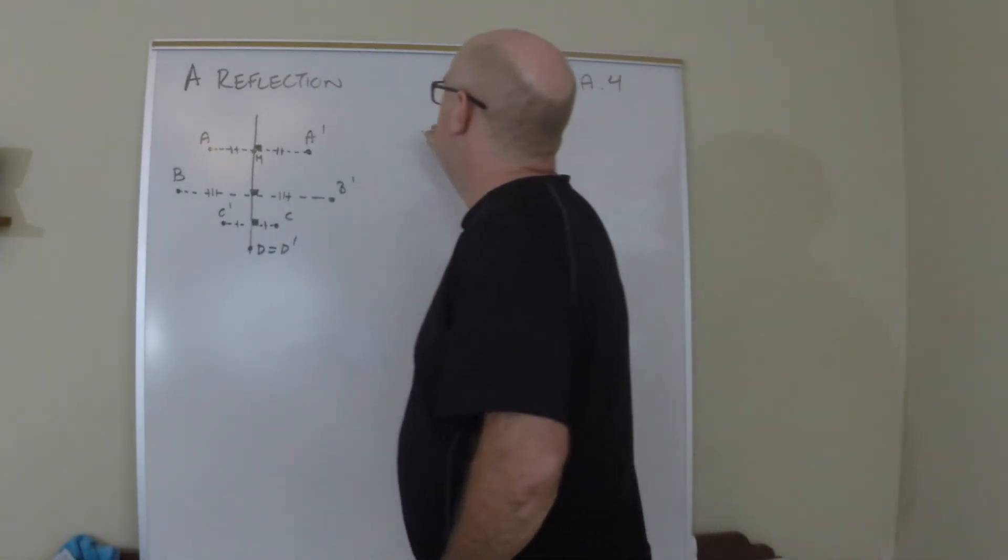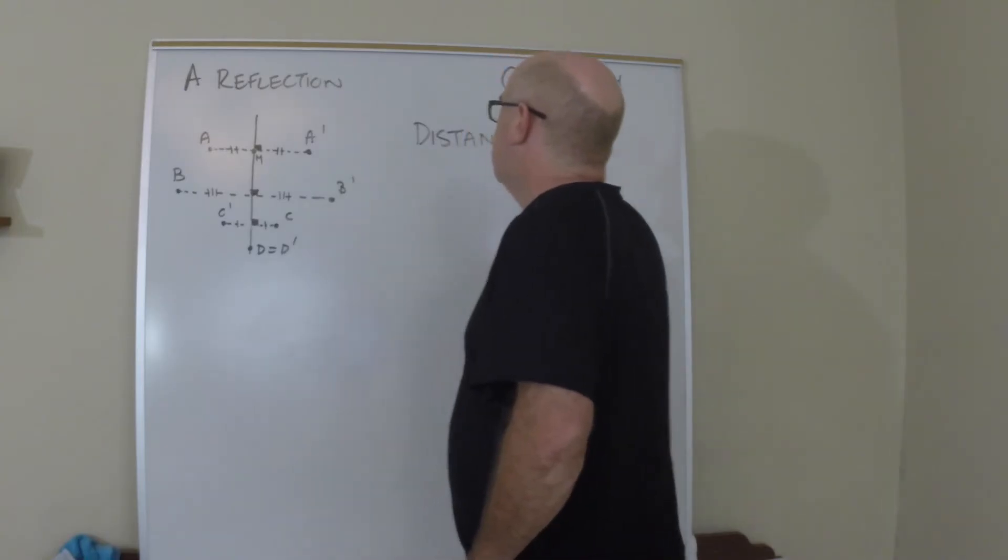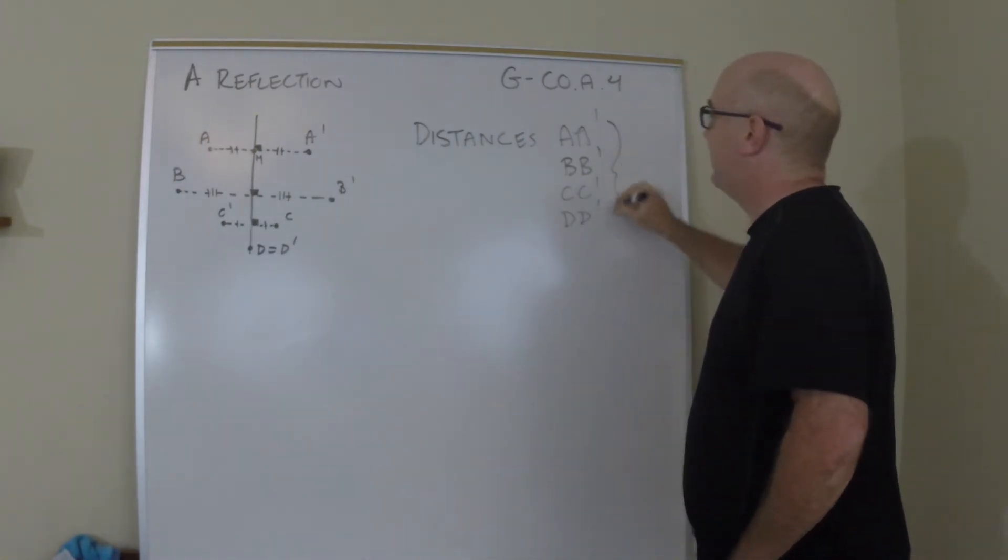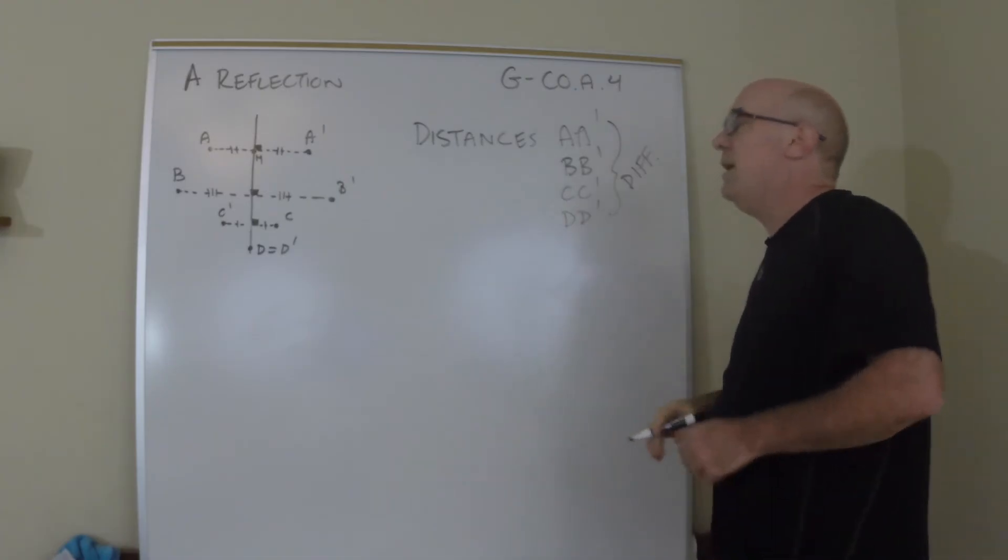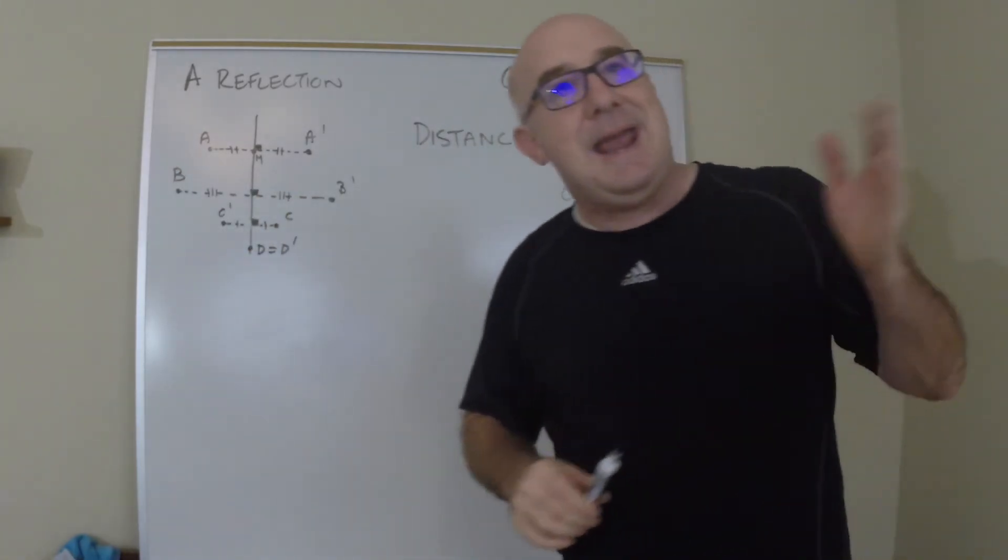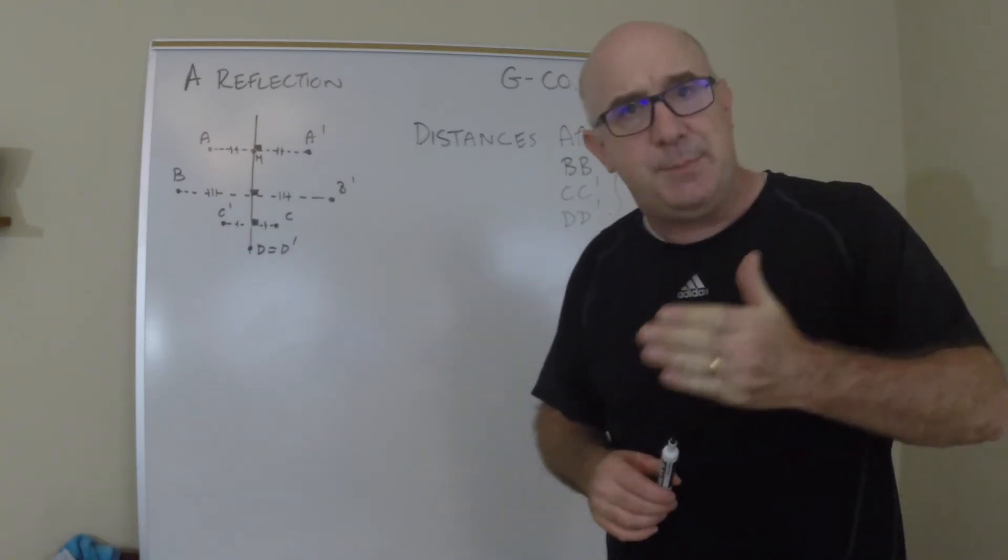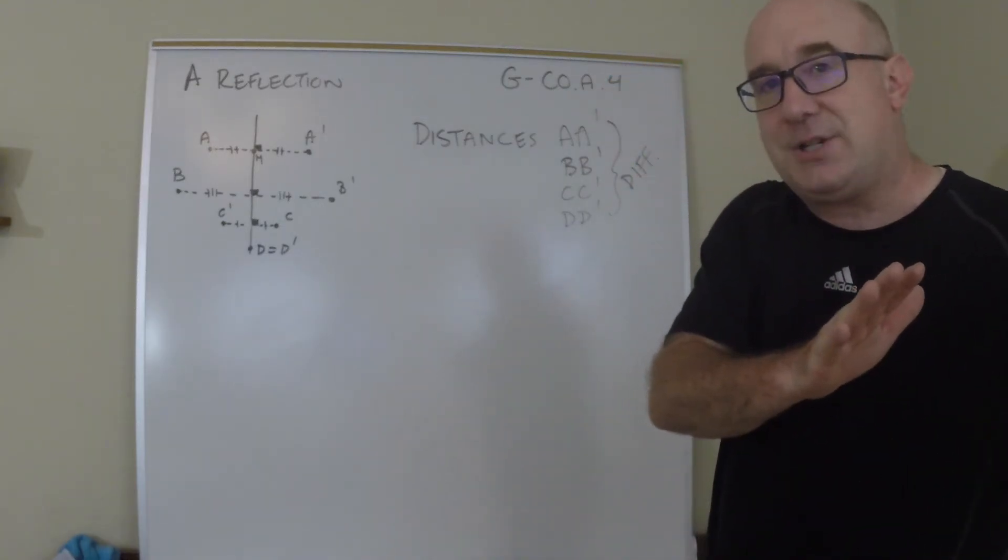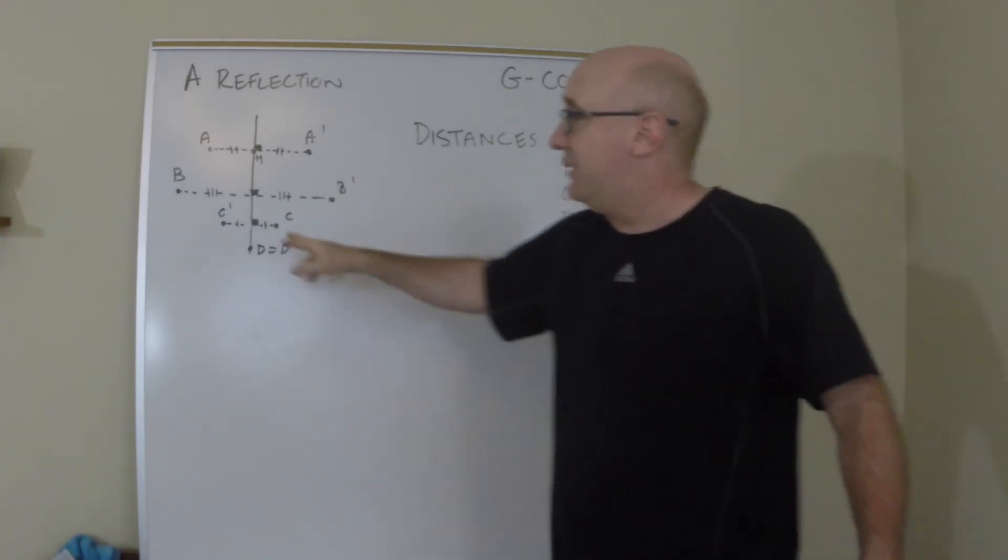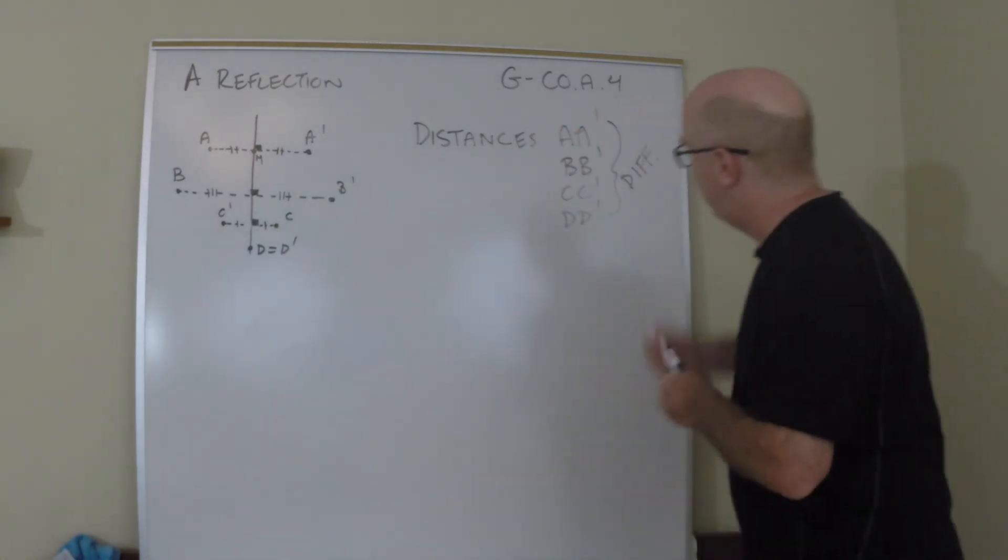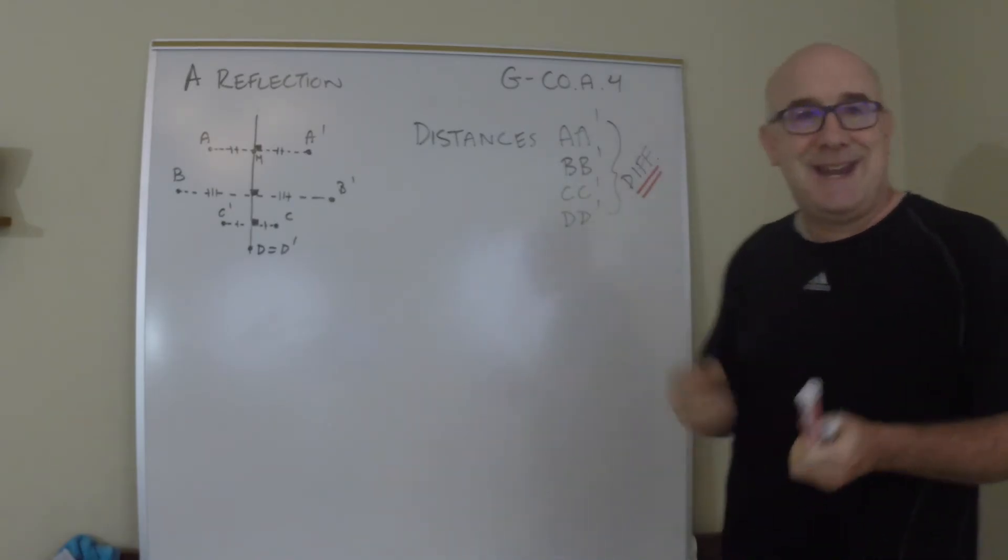Here are some other things that happen: distances moved - A to A prime, B to B prime, C to C prime, D to D prime - these distances are all different. Now the pieces are the same, but the total distance moved differs. A to A prime is a different distance than B to B prime, C to C prime, D to D prime, because the farther away you are to the line of reflection, the farther the distance you'll travel. If you're tight, you'll travel a small distance. So distances are different with a reflection - important characteristic.